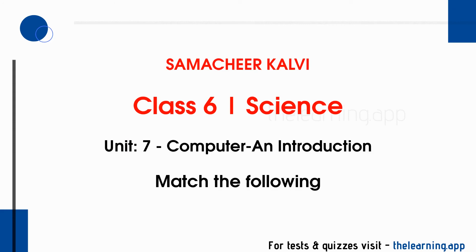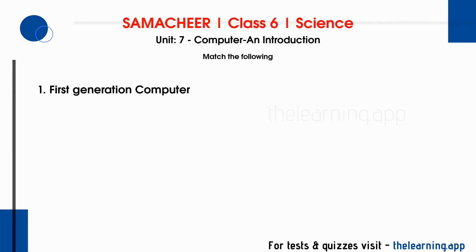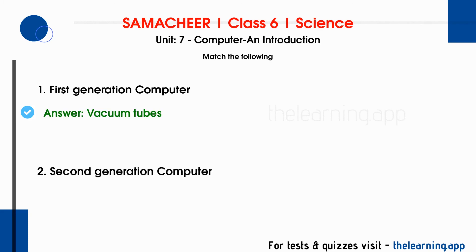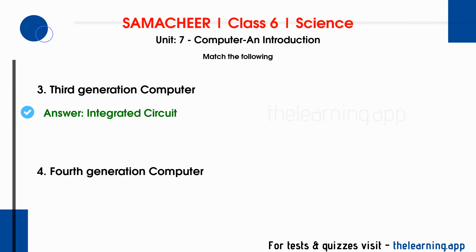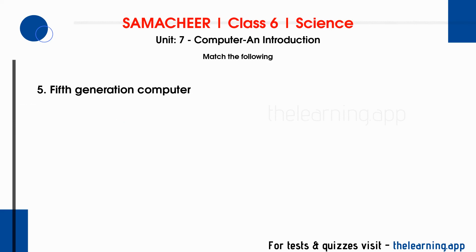Next, Match the Following. First generation computer — correct answer: Vacuum Tubes. Second generation computer — correct answer: Transistor. Third generation computer — correct answer: Integrated Circuit. Fourth generation computer — correct answer: Microprocessor. We currently use fourth generation computers, which work on microprocessors. Fifth generation computer — correct answer: Artificial Intelligence.